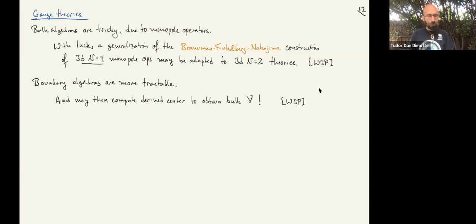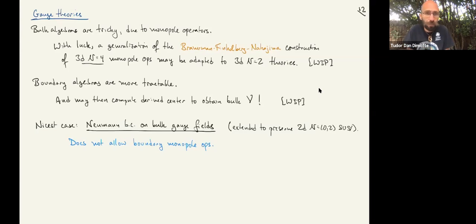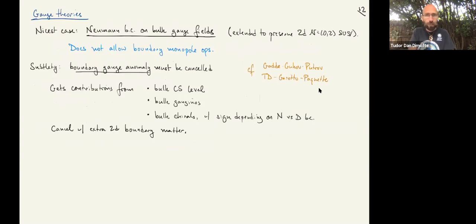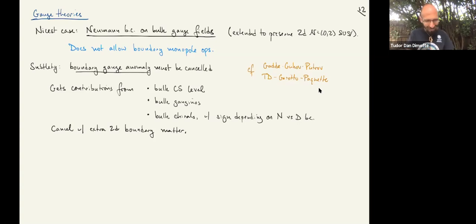There are a few cases in which boundary algebras are more tractable than bulk algebras. The nicest case by far is the boundary algebra for a Neumann boundary condition, because Neumann boundary conditions kill all the monopole operators and so you don't have to go through a non-perturbative analysis. For a Neumann boundary condition, the only subtlety with Neumann boundary conditions on the gauge fields is that there are two-dimensional gauge anomalies to be canceled. There's a systematic computation of these boundary anomalies: the rule of thumb is that you take the bulk Chern-Simons level and add to it half of what you would have gotten in a two-dimensional anomaly calculation. You cancel anomalies with extra boundary matter.